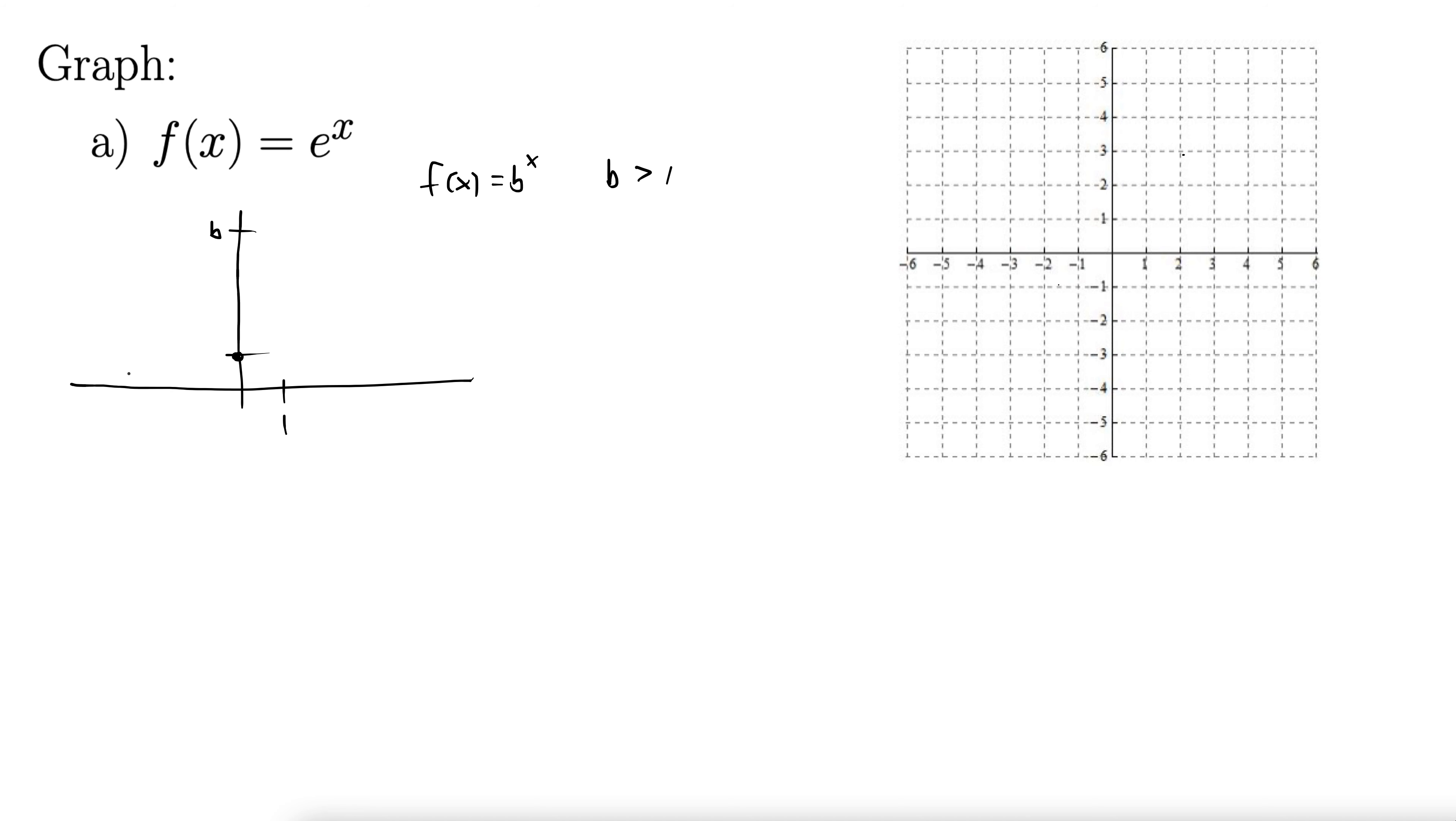Here it goes through 0, 1, and this will hold for any base b greater than 1, so 5 to the x, 10 to the x, 3 to the x, e to the x. It goes through 0, 1, that's really the anchor point, and then by the time we get over to 1 on the x-axis, we are up to b on the y-axis, and it makes this nice exponential curve that we recognize.